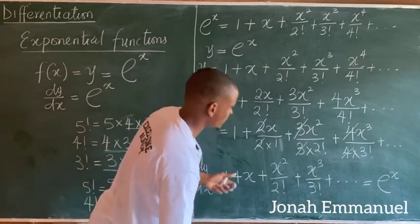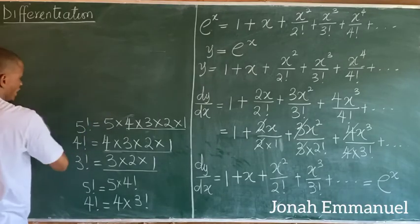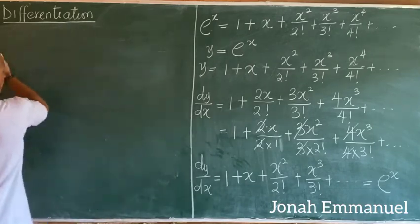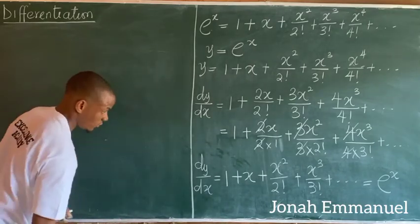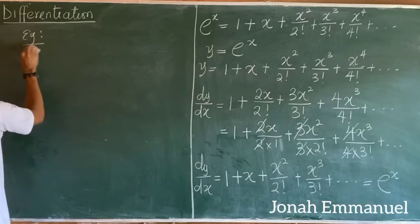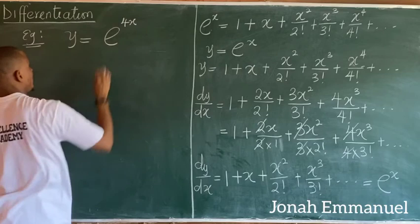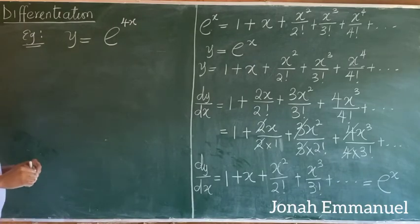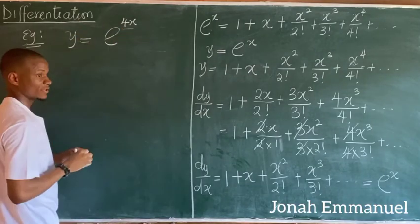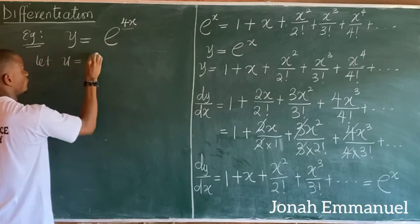We'll take one example on exponential functions to see how it works. Given that y equals e^(4x), how do we differentiate this? We'll use substitution: let u equal 4x.